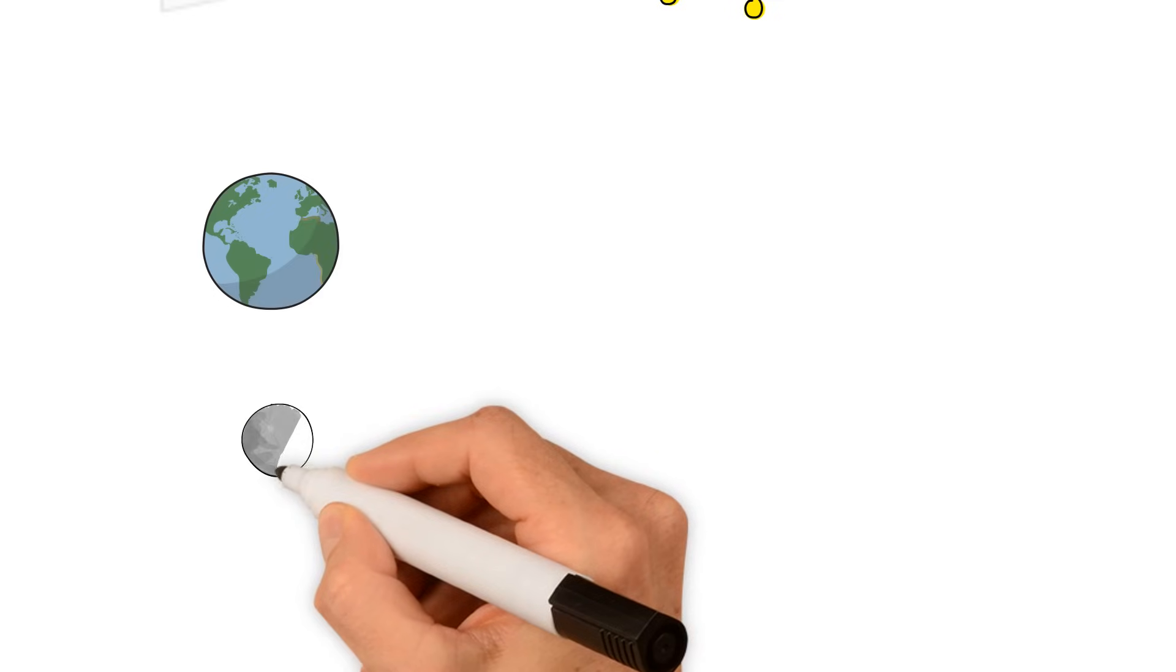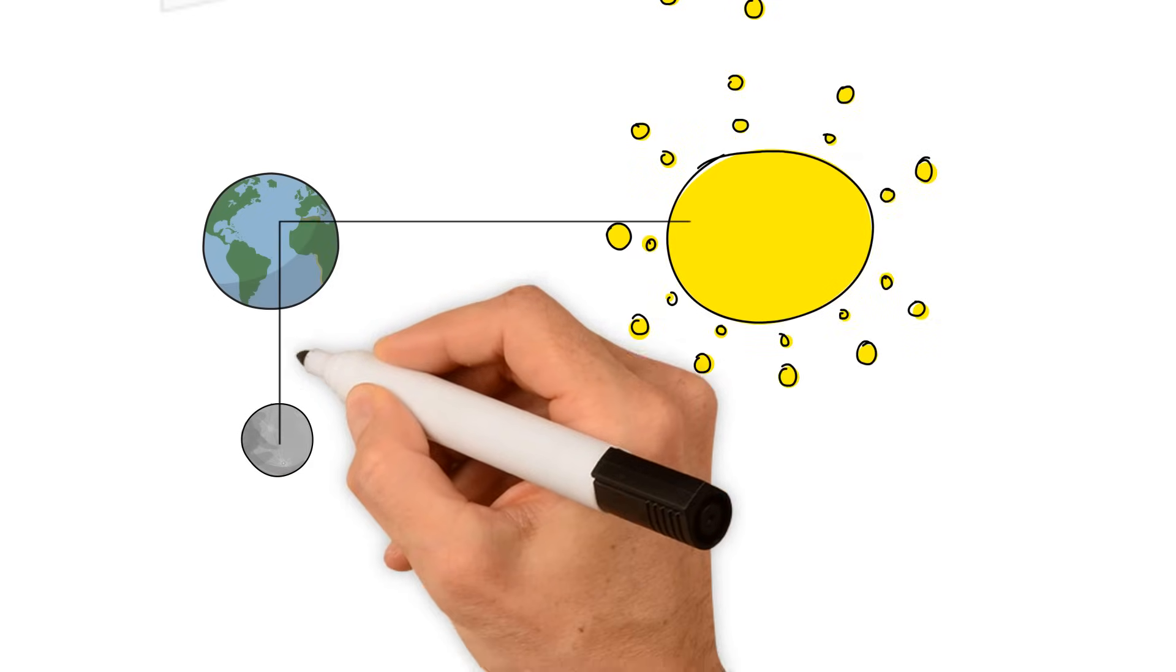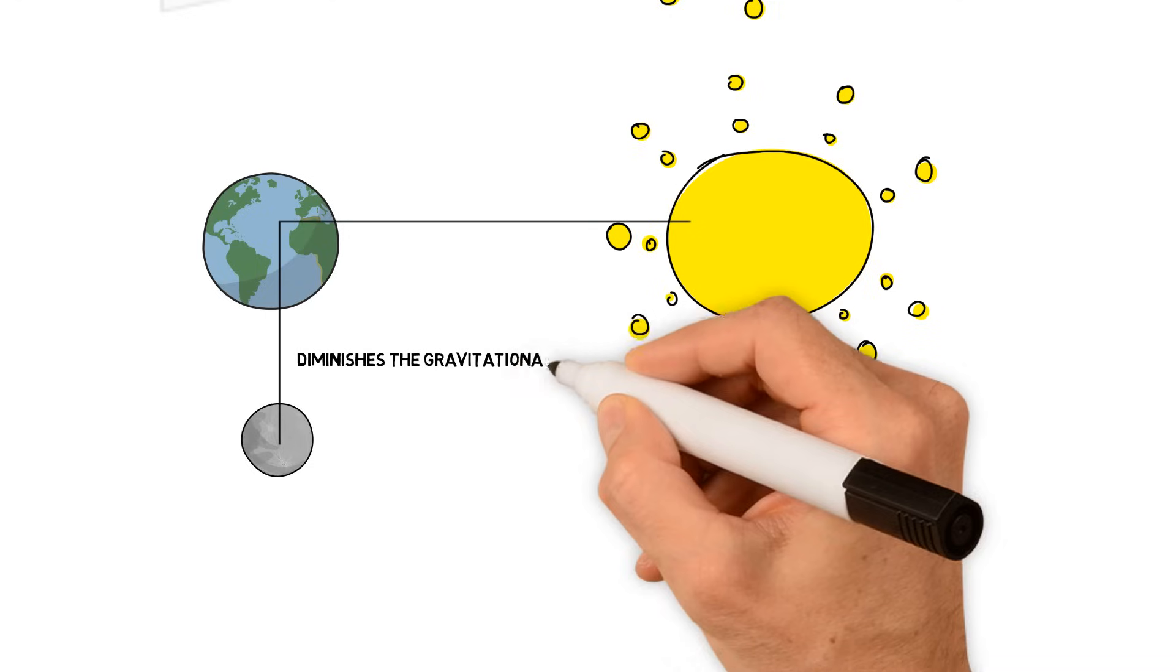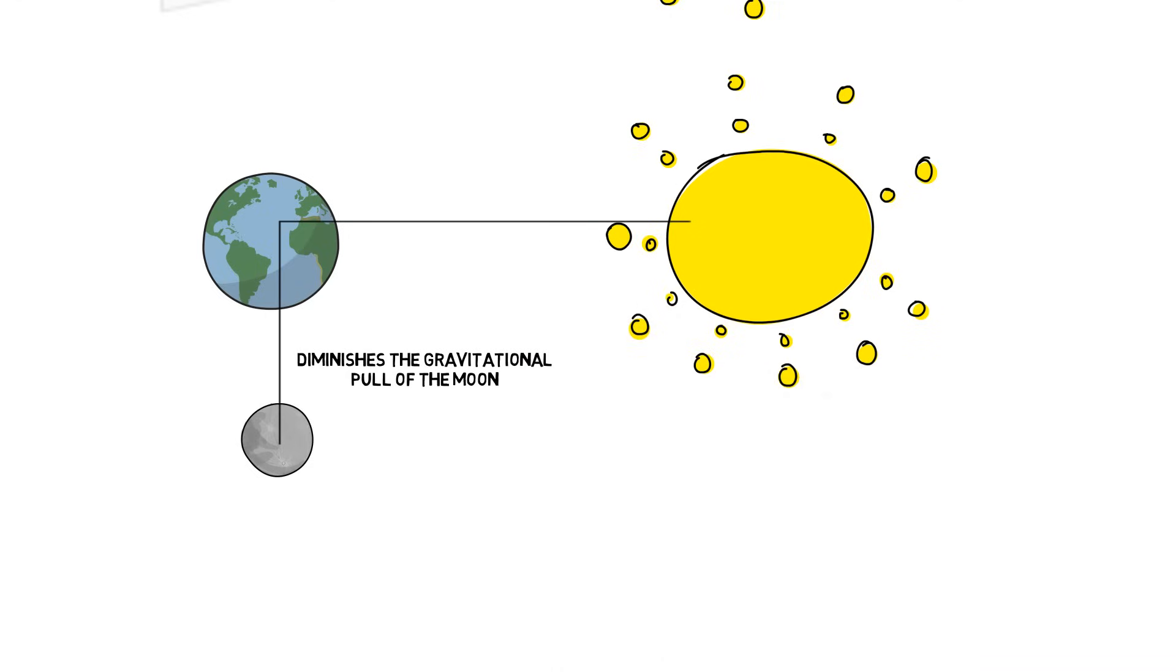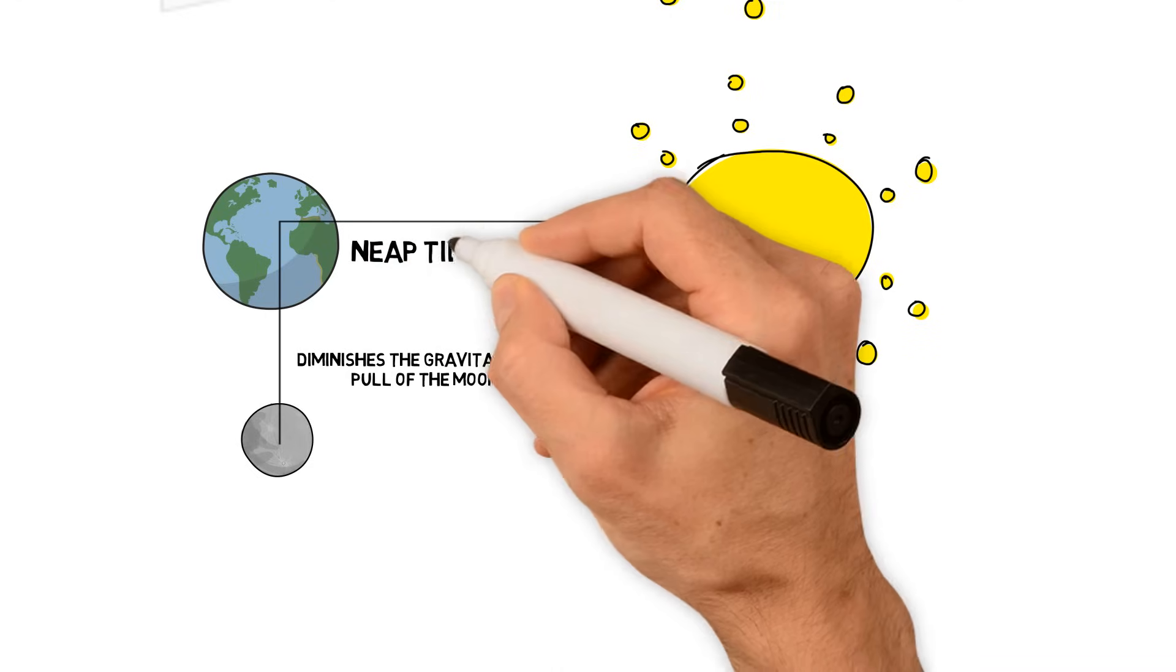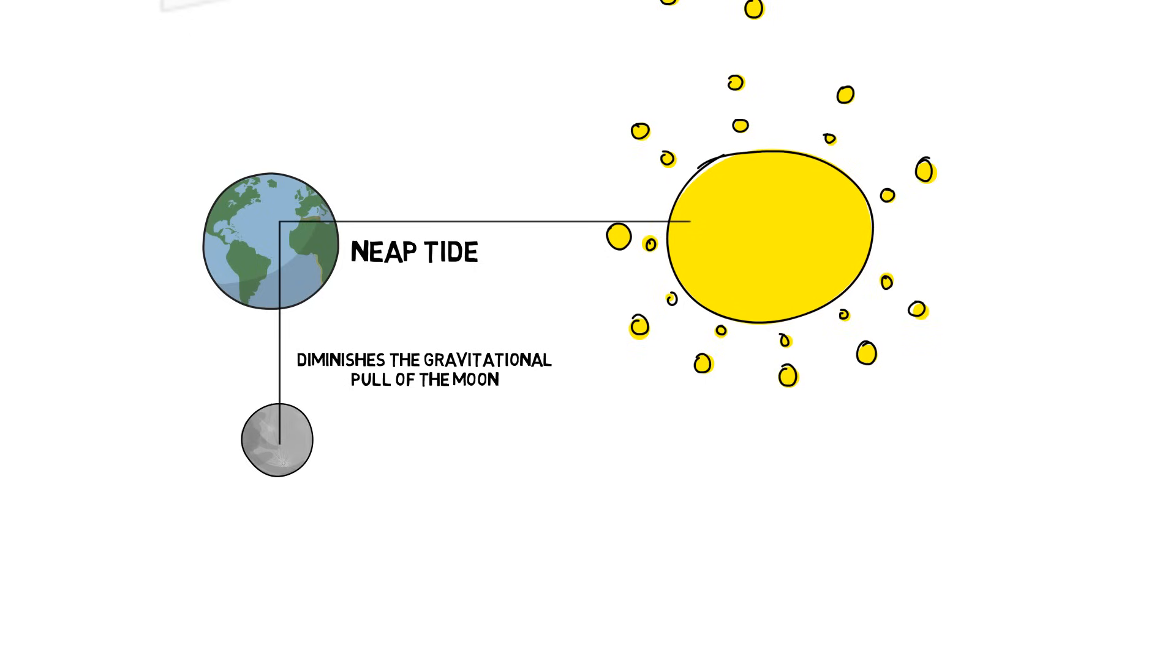But when the sun and the moon is at right angle, the sun diminishes the gravitational pull of the moon on earth. And that creates low tides. They are called neap tides. So this is how tides are formed.